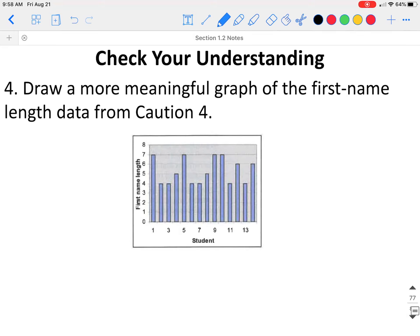We need to draw a more meaningful graph for the first name length. The first thing you need to do is identify how many you have. There are 1, 2, 3, 4, 5, 6 students who have a name length of 4. So if we have a length of 4, there are 6 of those students. We have 1, 2 students who have a length of 5. There are 2 students that have a name length of 6. And 1, 2, 3, 4 students who have a name length of 7.